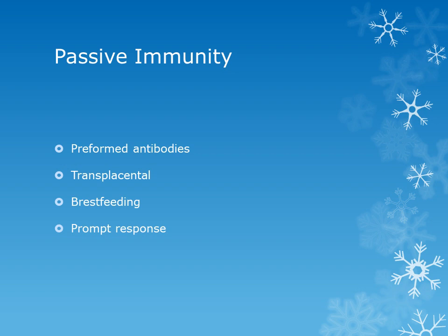Two important examples of passive immunity are transplacental transfer and breastfeeding. Breastfeeding involves the passage of immunoglobulin A molecules from mother to newborn. Transplacental passage involves immunoglobulin G molecules. Immunoglobulin G is the only antibody that passes from the maternal circulation to the fetal circulation.